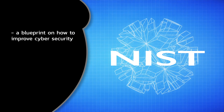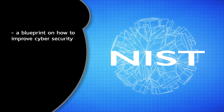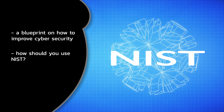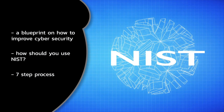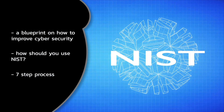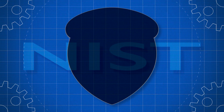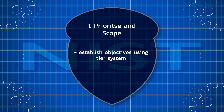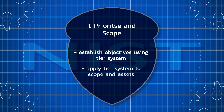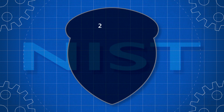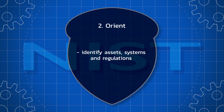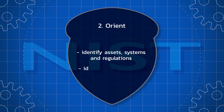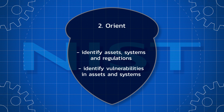We have established that the NIST framework gives organizations a blueprint on how to improve their cybersecurity risk management. But how should you use it? NIST framework documentation suggests a seven-step process. Step 1 – Prioritize and scope: establish your cybersecurity objectives using NIST's tier system and the scope of systems and assets they apply to. Step 2 – Orient: identify assets, systems and regulatory requirements that determine your overall risk approach and identify vulnerabilities in those assets and systems.